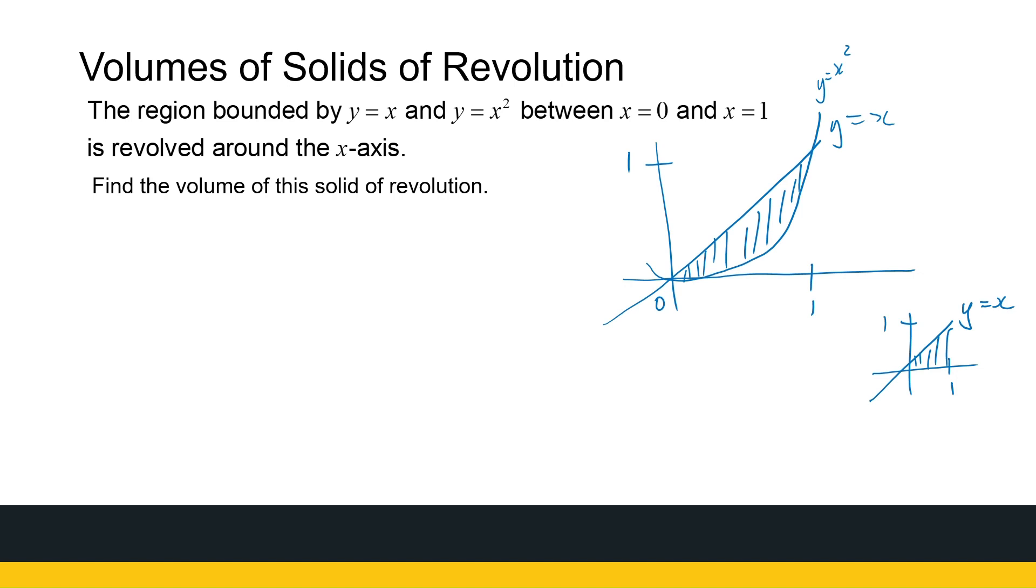To find the area of that slice is going to be pi times the radius squared. But the radius, in this case, if I look at my slice, it's going to be a disk where I've got a bigger radius and a smaller radius. My outside radius is my outside, my upper function, which is y equal to x in this case.